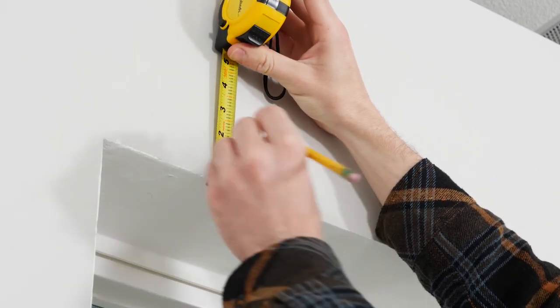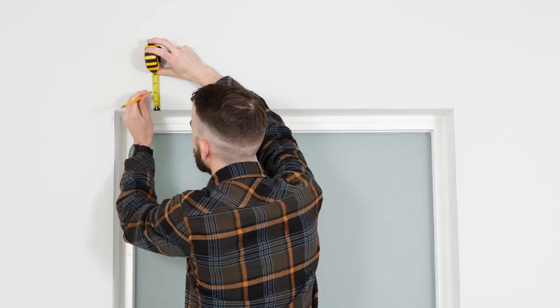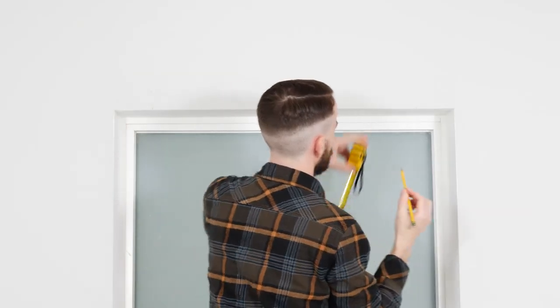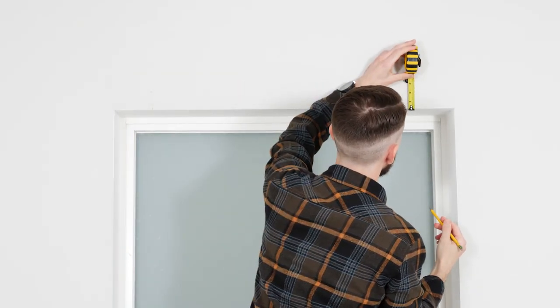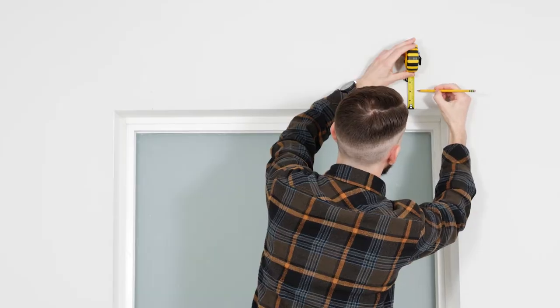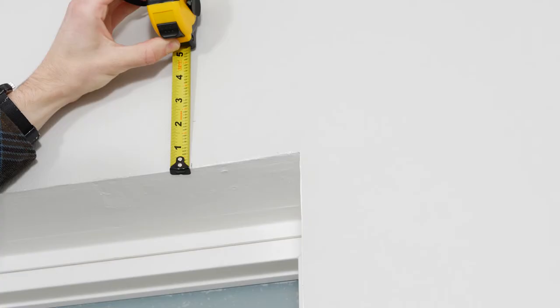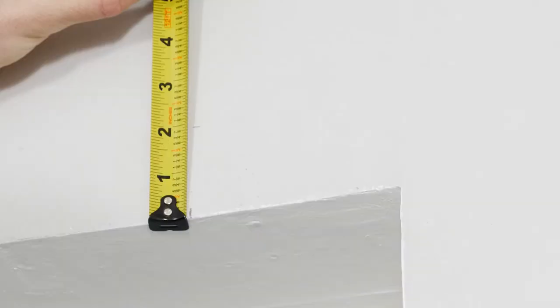Depending on the size of your brackets, you'll need a minimum of 5 eighths of an inch above the top of the window. From your first marks, measure up at least 5 eighths of an inch. For our window, we will measure 2 inches above the frame for each bracket.